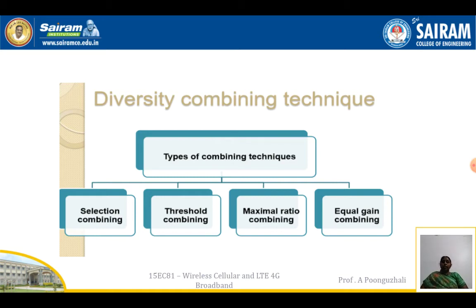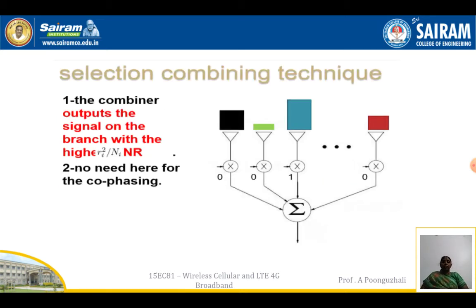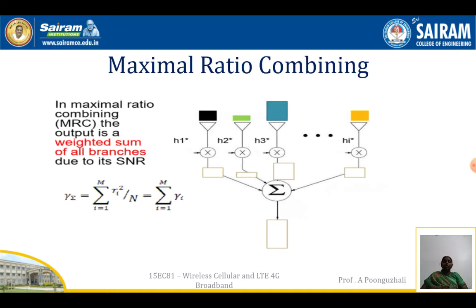The diversity combining techniques are: selection combining, threshold combining, maximal ratio combining, and equal gain combining. In selection combining, different signals are received at the different receivers. The signal which has the highest signal-to-noise ratio is selected — the name itself is 'selection combining.' The combiner outputs the signal on the branch with the higher SNR, that is gamma = r² / ni, and we do not need any co-phasing.